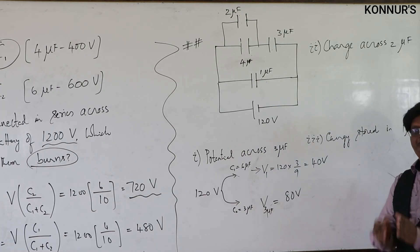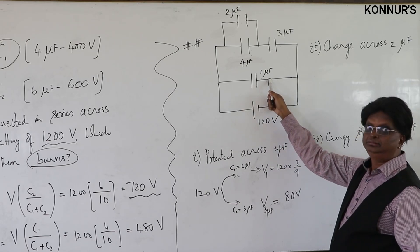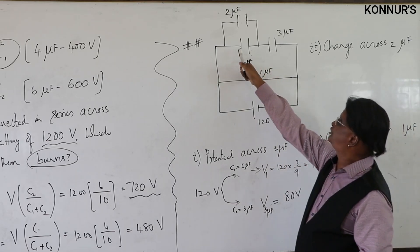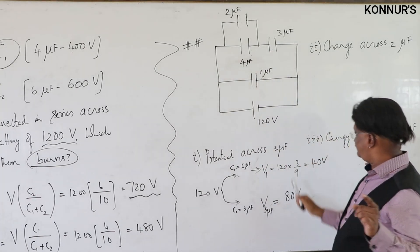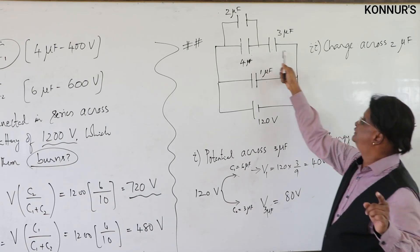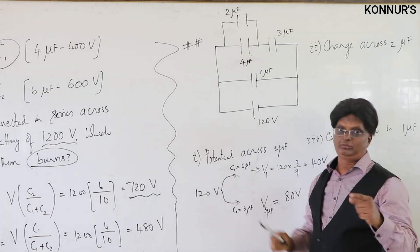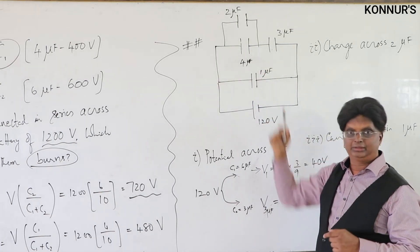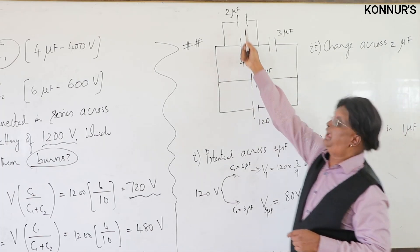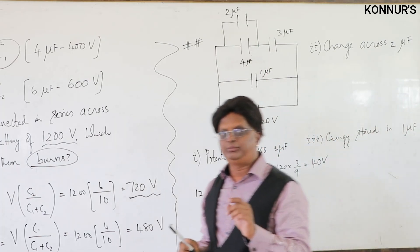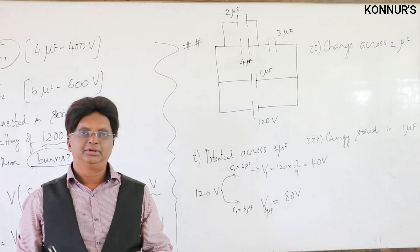Summary of potentials: 1 microfarad gets all 120 volts; 3 microfarad gets 80 volts; 4 microfarad gets 40 volts; 2 microfarad also gets 40 volts (since 2 and 4 are in parallel). So voltages are 120 V, 80 V, 40 V, and 40 V across the respective capacitors.